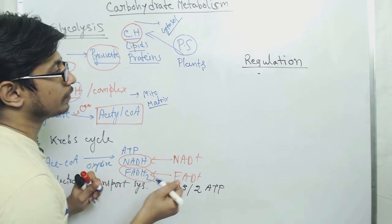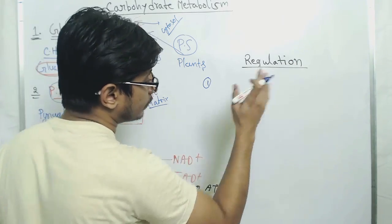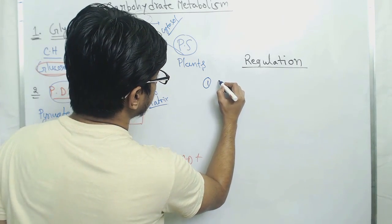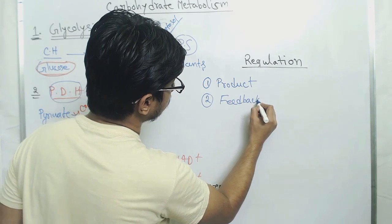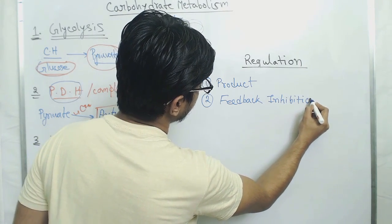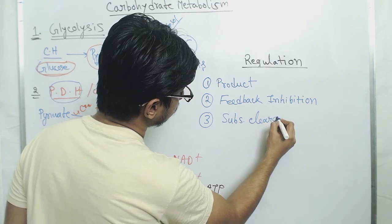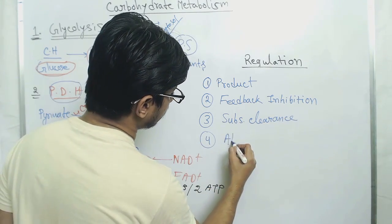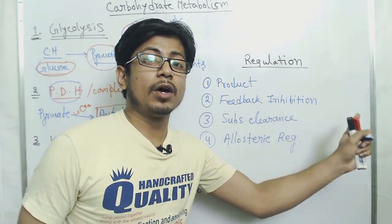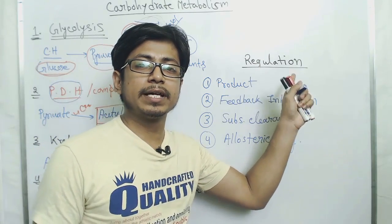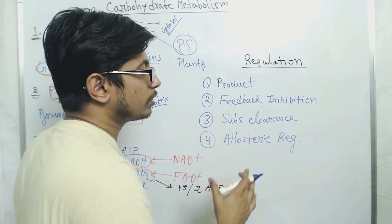If we talk about the regulation of glycolysis or Krebs cycle, there are a few ways the whole process can be regulated. The first is product inhibition, the second is feedback inhibition, the third is substrate clearance, and the fourth is allosteric regulation. These are the four ways of regulation we will see in case of all glycolysis and Krebs cycle enzymes.